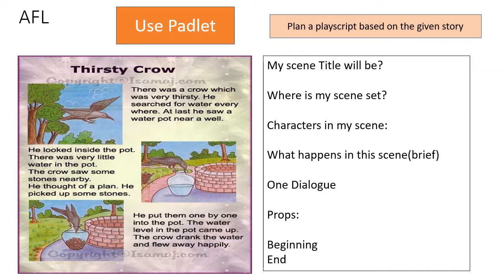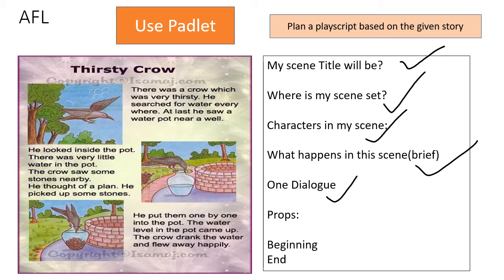Here is your AFL question. 'Thirsty Crow.' There was a crow which was very thirsty. He searched for water everywhere. At last he saw a water pot near a well. He looked inside the pot — there was very little water. The crow saw some stones nearby. He thought of a plan. He picked up some stones and put them one by one into the pot. The water level came up. The crow drank the water and flew away happily. Now answer: What will be your scene title? Where is your scene set? Who are the characters? What happens in the scene? Write one dialogue said by the crow. What are the props used? Write the beginning and end in one sentence each, and a narration. I'll give you a few minutes to complete this.